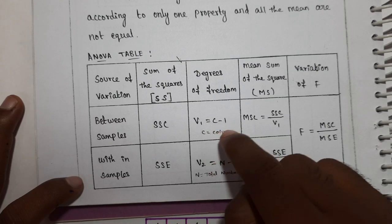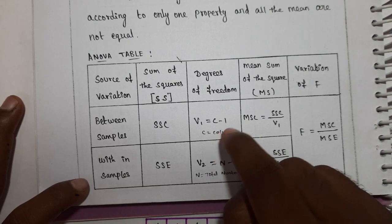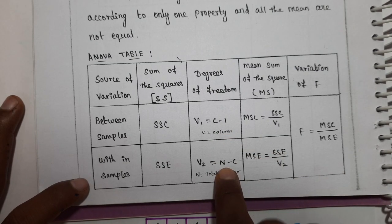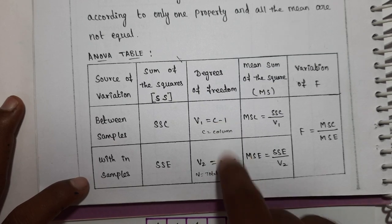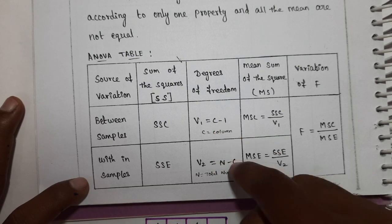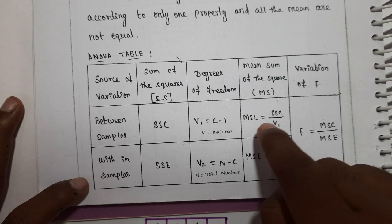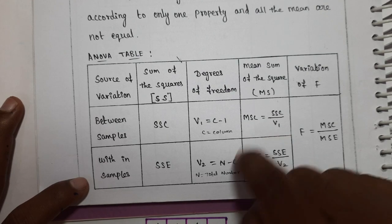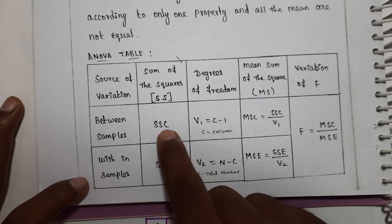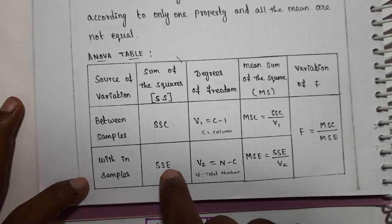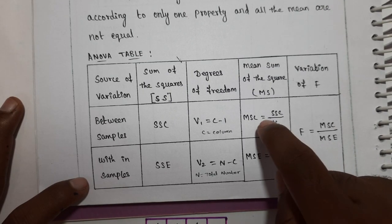The degrees of freedom for columns is c minus 1, and for error is n minus 1 minus (c minus 1). The mean sum of squares is SS divided by the respective degrees of freedom. The F-ratio is MSC divided by MSE.